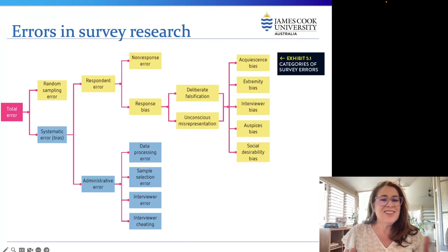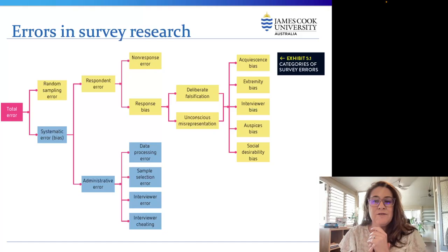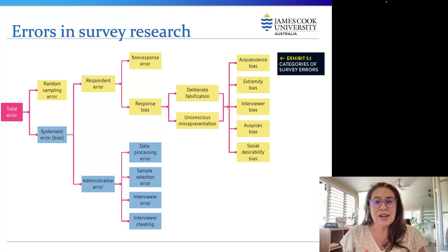It's not uncommon for errors to occur when conducting survey research. Exhibit 5.1 from the textbook outlines the various forms of survey error that can affect the accuracy of a survey. Survey error can be broken down into two types: random sampling errors and systematic errors.